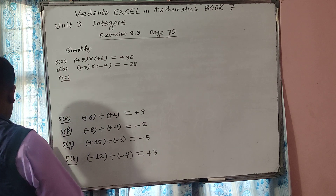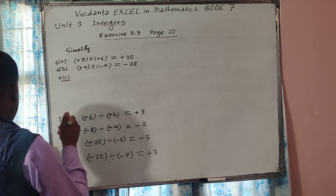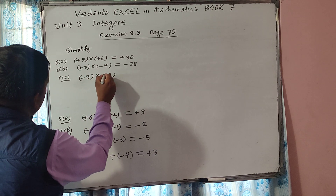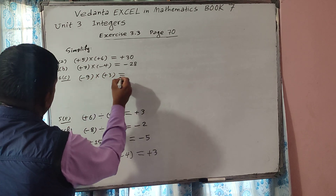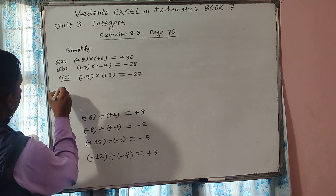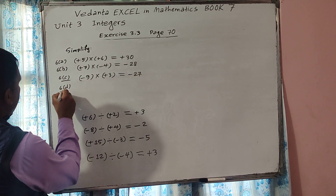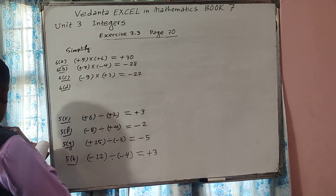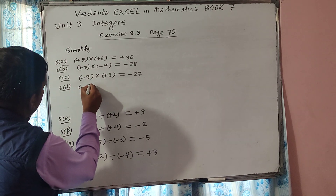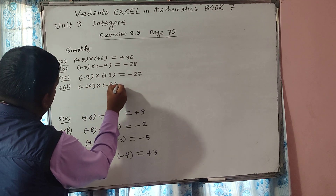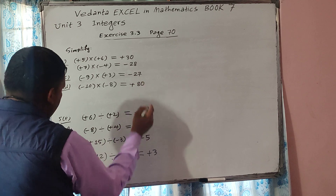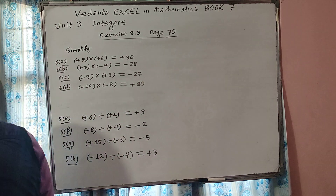Now 6C: minus 9 multiplied by plus 3. Minus 9 multiplied by plus 3. We know that minus into plus gives minus — 9 times 3 is 27, so minus 27 is the answer. Now 6D: minus 10 multiplied by minus 8. We know that minus into minus gives plus — 10 times 8 is 80, so plus 80 is the answer.